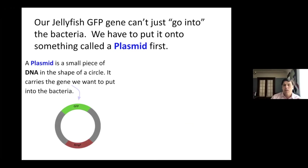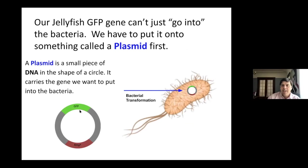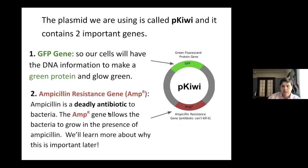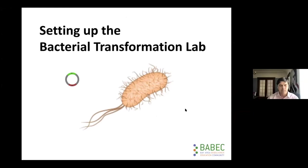I'm not going to talk a lot about the ampicillin resistance gene today. This is a place where lots of kids struggle with their understanding of this, so you'll have to make a decision as a teacher about how much of this you want to share, because it can be difficult. The short of it is that the bacteria is able to live in the presence of the antibiotic ampicillin if it has this gene in it. So that takes us to the end of day two, going through what bacterial transformation is and then introducing this idea of a plasmid.